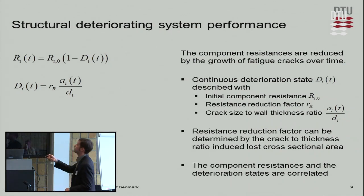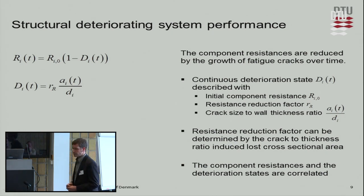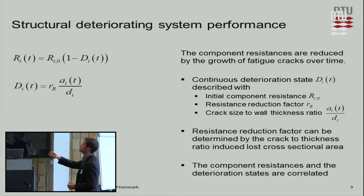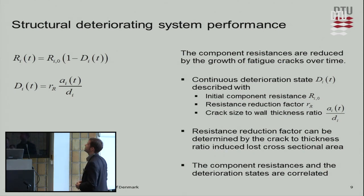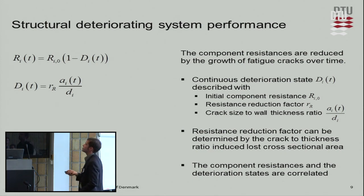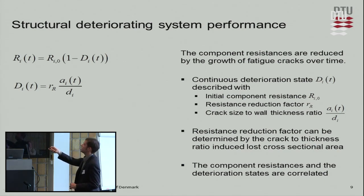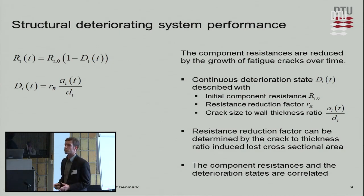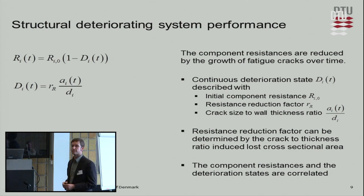The component resistance reduces over time due to deterioration, described using a fracture mechanics fatigue model with crack sizes. We also introduce the wall thickness — not the diameter — so this is not limited to circular hollow sections. The crack size to wall thickness ratio develops over time, and we have a resistance reduction factor RR that can be adjusted for each component depending on cross-sectional properties.